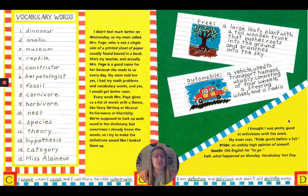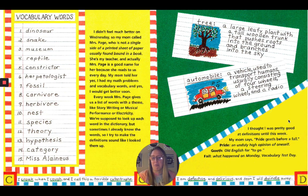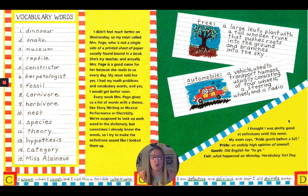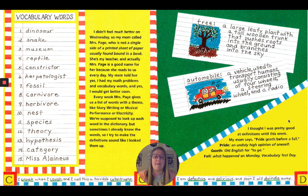Like tree: a large leafy plant with a tall wooden trunk that pushes roots into the ground and branches into the sky. I thought I was pretty good at definitions until this week. My mom says, "Pride goeth before a fall." Pride: an unduly high opinion of oneself. Goeth: old English word for "to go." Fall: what happened on Monday, vocabulary test day.